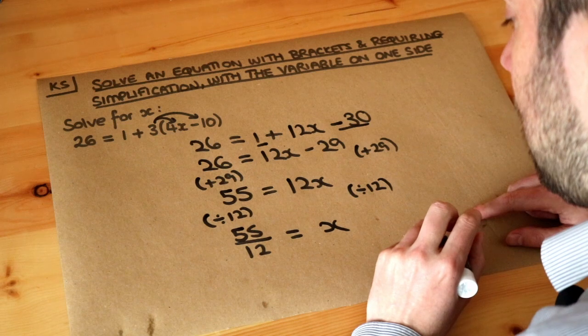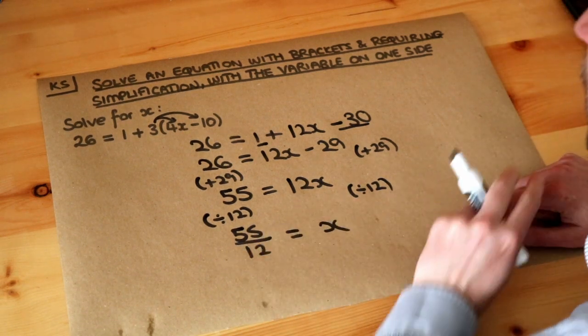And that is the final answer. x is equal to 55 over 12.